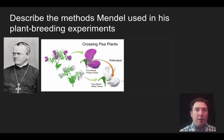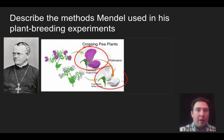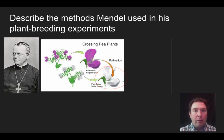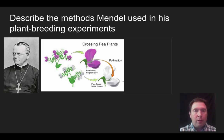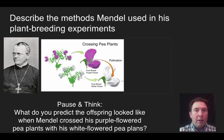When he crossed pea plants, he would go and get different varieties of plants. For example, there is a purple flower variety of pea plants and there is a white variety of pea plants. What he did is he crossed the two of those. I want you to take a moment and pause and think — what do you think the color of the pea plants were after he crossed the purple flowers with the white flowers?